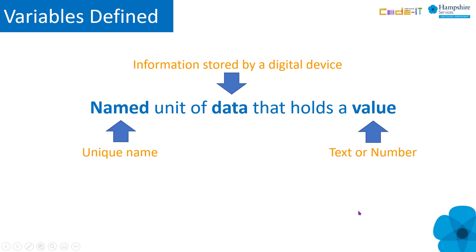A variable is a named unit of data that holds a value of a specific type, namely a number or a string. A string is a value that contains anything — text, numbers, punctuation, etc. — that is not treated as a number. For earliest foraging variables it's easier to just talk about text or numbers, and that's a reasonable accepted simplification for primary pupils.